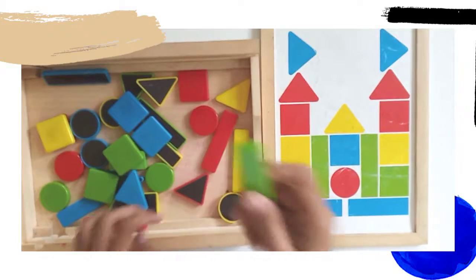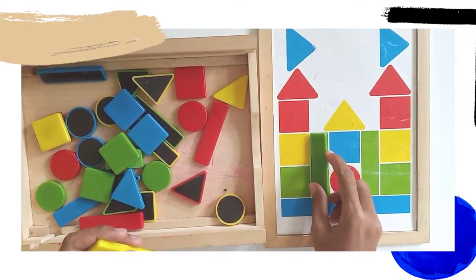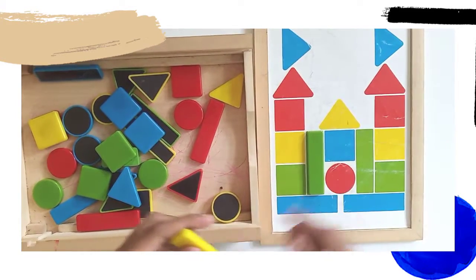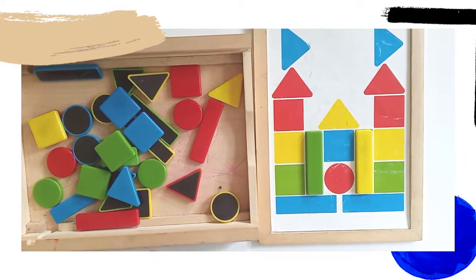Yeah, this one, the green one, yellow one. Let's just use two rectangles here and put it here according to the shape, okay?